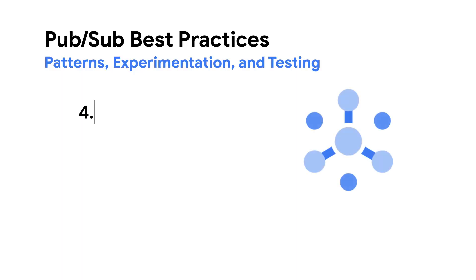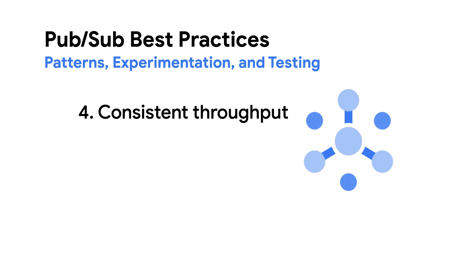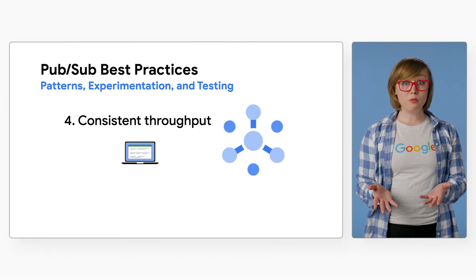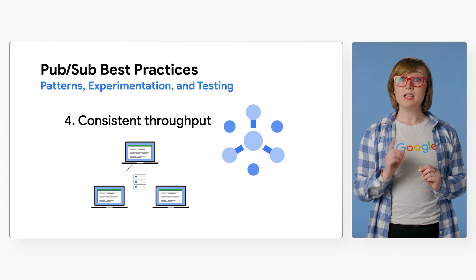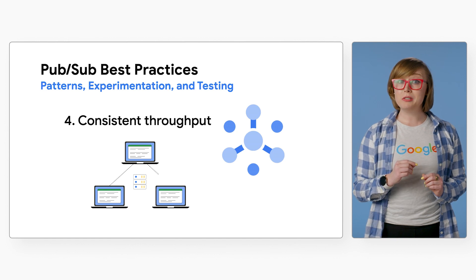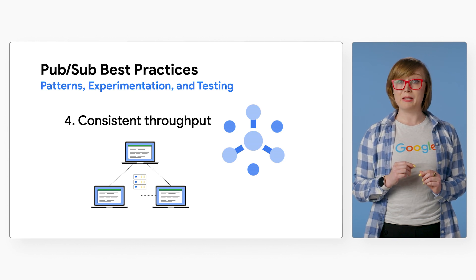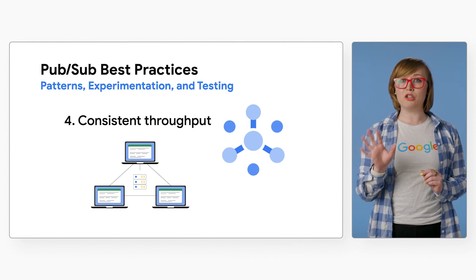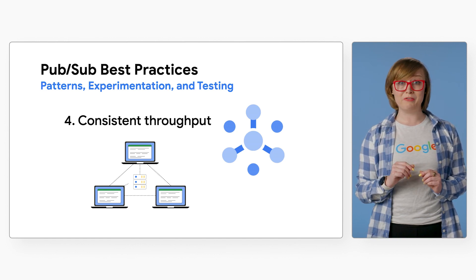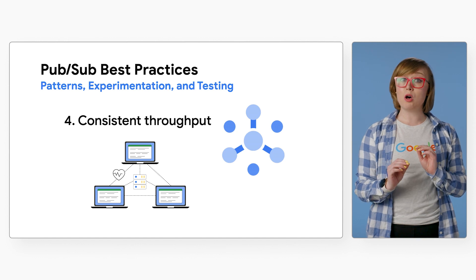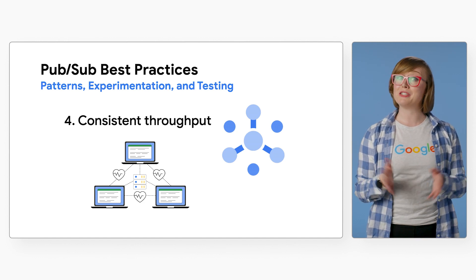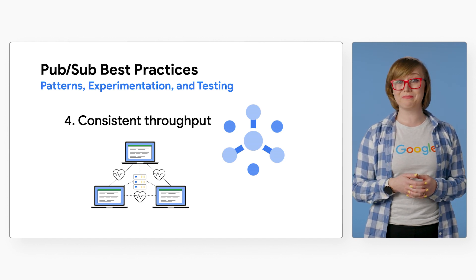Number four: consistent throughput. PubSub works best with high throughput streams of data. If you need low delivery latency but only have a low throughput stream of data, you may want to send small heartbeat messages to keep a topic warm.